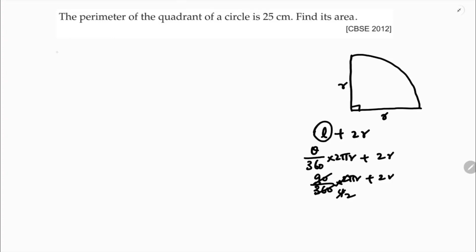The perimeter formula for a quadrant is πr/2 + 2r, and the perimeter is given as 25 centimeters. So we have: πr/2 + 2r = 25.